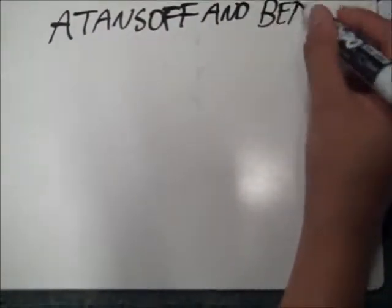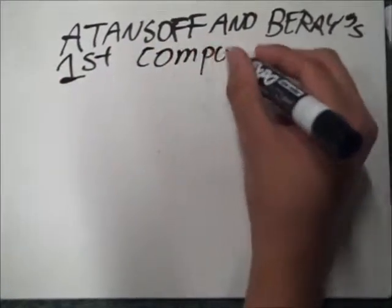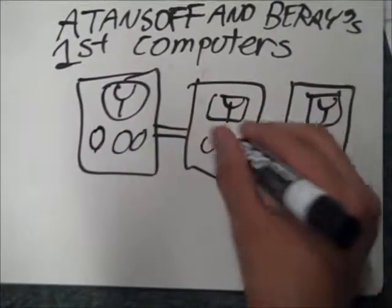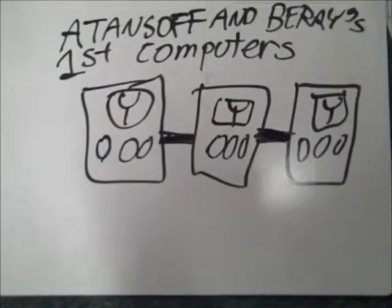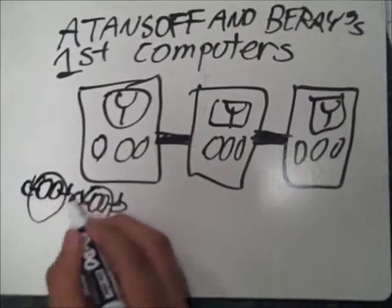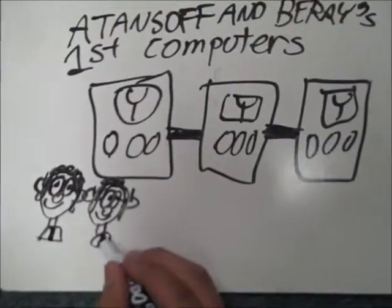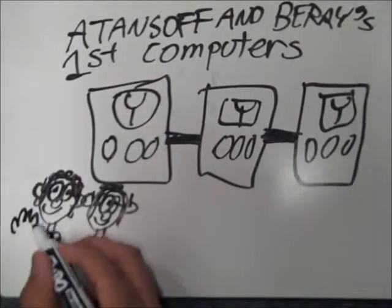John Atanasoff and Cliff Berry designed and built the Atanasoff-Berry computer in 1942, which subsequently caused a patent dispute over who had the rights to the computer ideas. It was decided to make Atanasoff and Berry the creators of the computer, but the idea of computers is unpatentable.